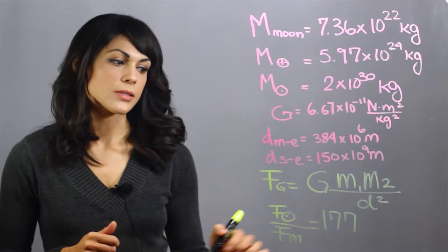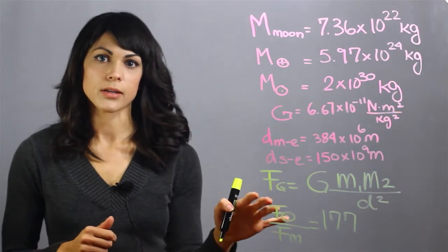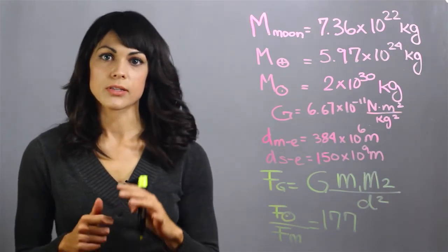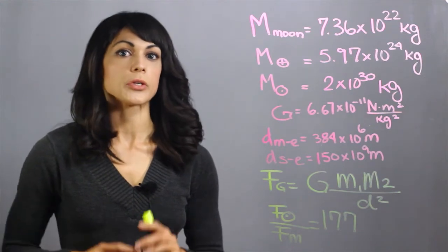What does this mean? It means that the gravitational pull of the sun on earth is 177 times stronger than the gravitational pull of the moon on the earth.